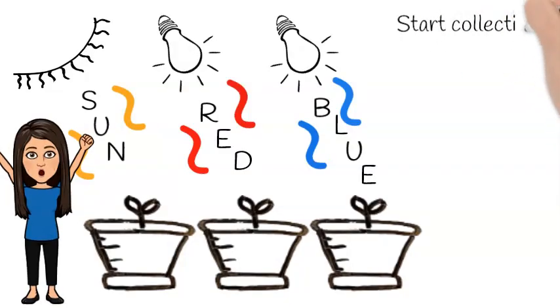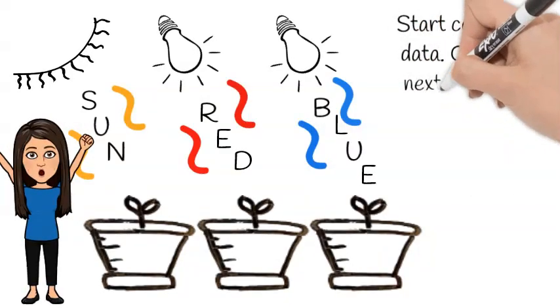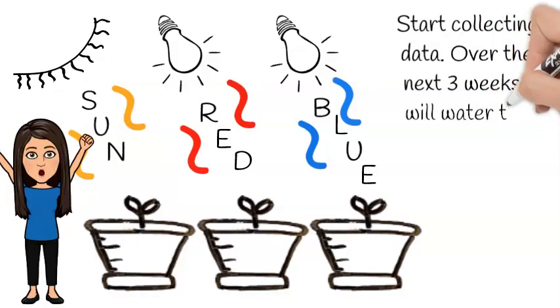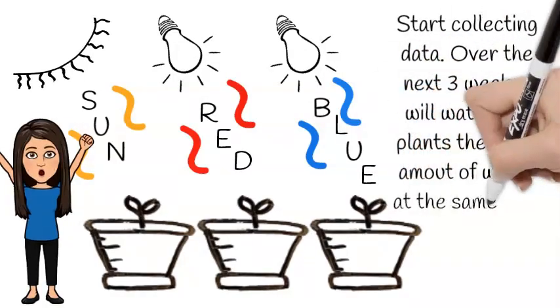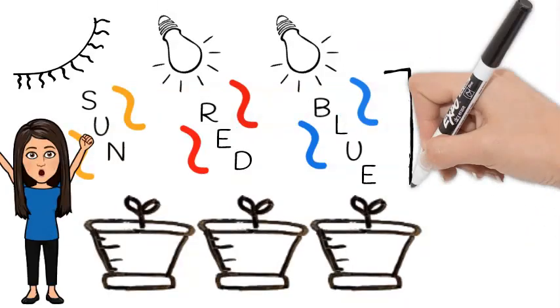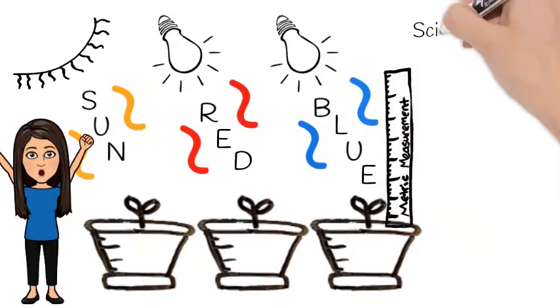Now that the control experiment is all set up, I can go ahead and start collecting data. Over the next three weeks, I will be watering the plants the same amount of water at the same time of day. Each day, I will record their growth using centimeters.